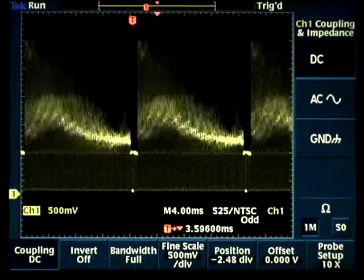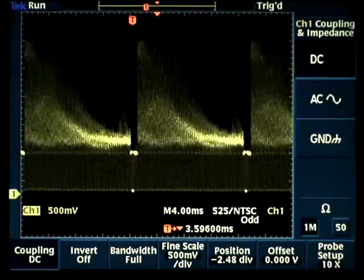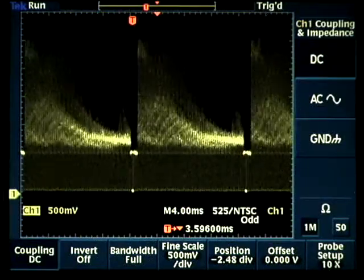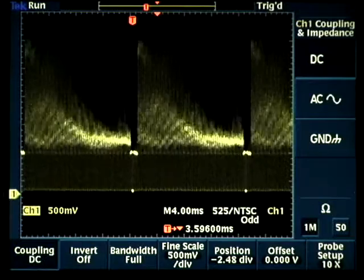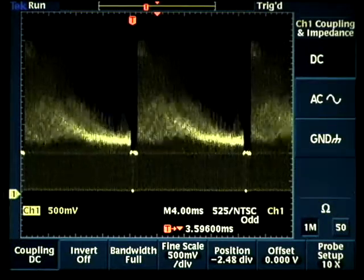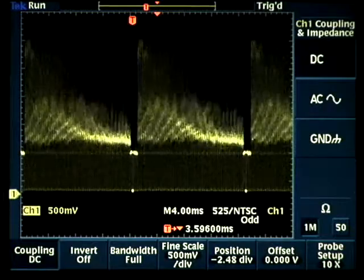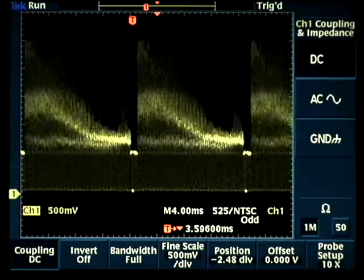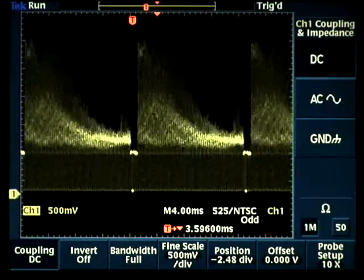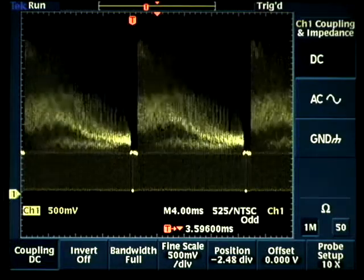Looking at the same signal on the TEC TDS3054B 500 MHz oscilloscope, you can see the downside of much older technology. Updating at a maximum rate of 3600 waveforms per second and utilizing a VGA display with only 16 levels of intensity, the display quality is no match for the Agilent scope.